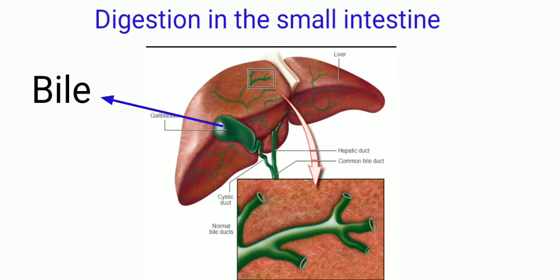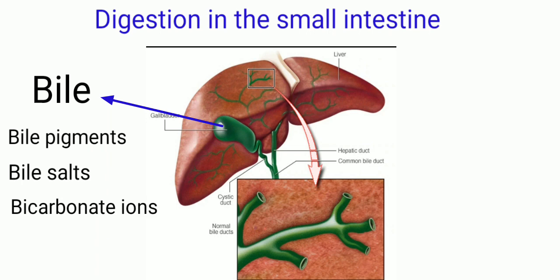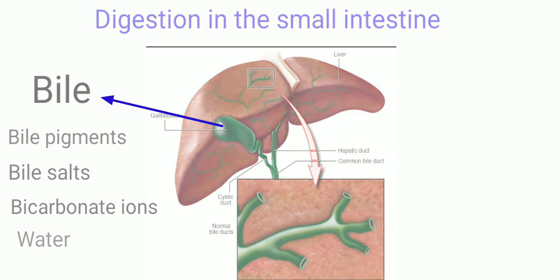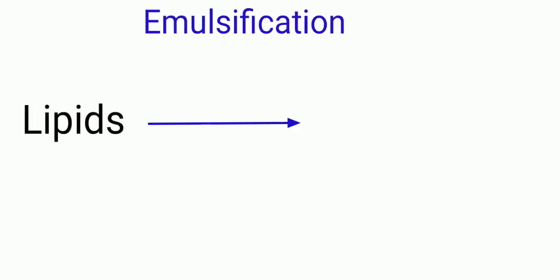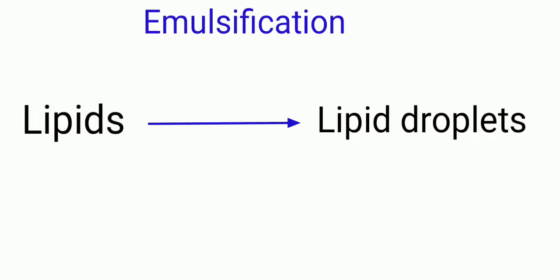Bile is a greenish-yellow liquid produced in the liver, partly from substances resulting from the breakdown of old red blood cells. It contains bile pigments, bile salts, bicarbonate ions, and water. Bile is stored in the gallbladder and released whenever food enters the duodenum. When bile is mixed with food at the duodenum, the lipids are broken down into small droplets. This process is called emulsification, and it increases the surface area for the action of enzymes.